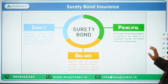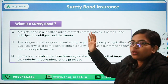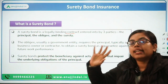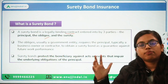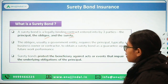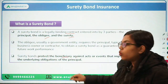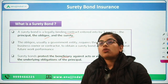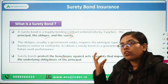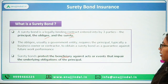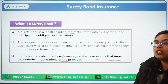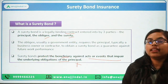So I hope you understand the surety bond insurance arrangement. The definition: it is a legally binding contract entered into by three parties. We have the principal — basically the contractor; then the obligee — basically a government company or government entity; and finally the surety — the insurance company. The surety bond protects the beneficiary — here the government, who gave the contract to build highways or roads — against acts or events that impair the underlying obligation of the principal. If the contractor does not fulfill his obligation, the government gets the guarantee.